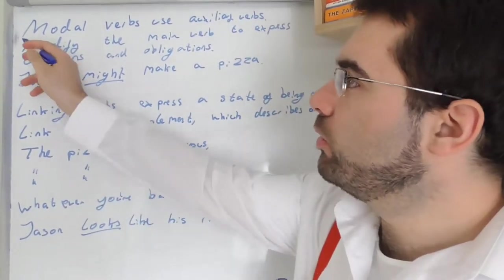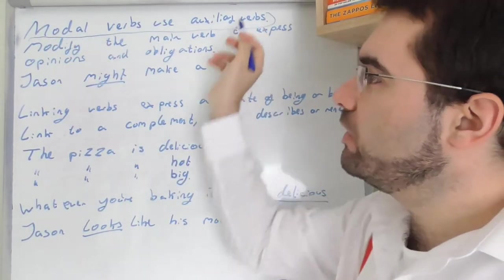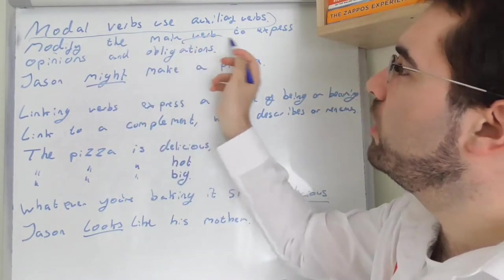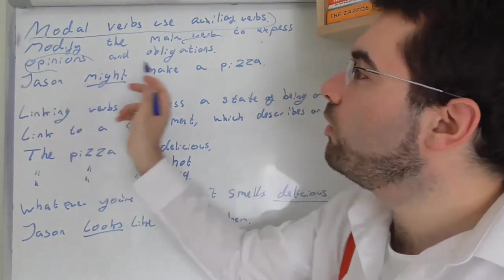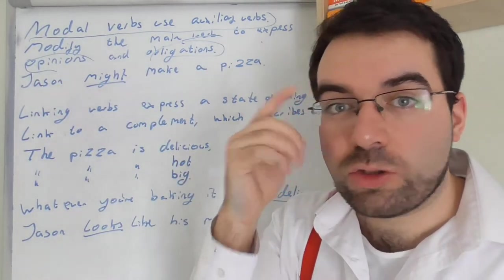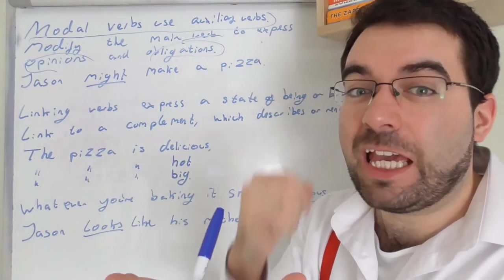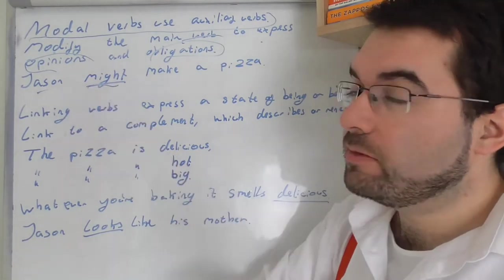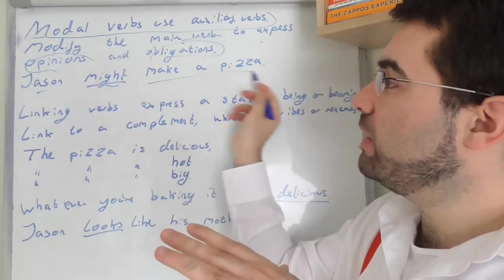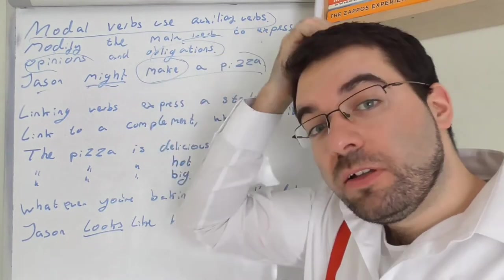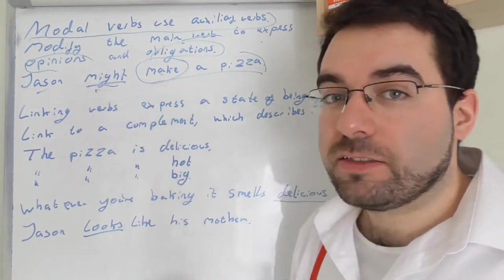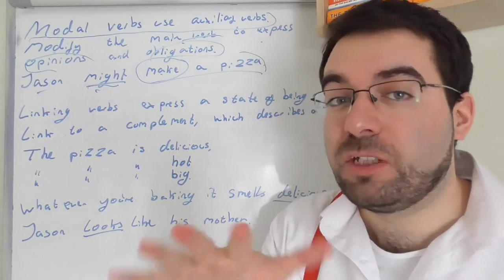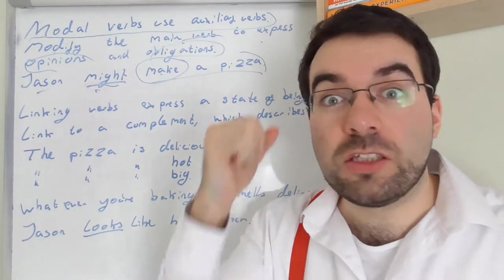Then let's look at modal verbs and auxiliary verbs. Let's look at how they work together. So modal verbs modify the main verb to express an opinion or obligation. Something you think or something you really should do. It's like you have to do this. You have to. So Jason might, maybe, might make a pizza. Make being the verb. So the modal verb modifies the verb. Jason might, 50-50 chance, maybe, maybe or not. Or Jason should, he should make a pizza. He has to, it's inevitable. He must.